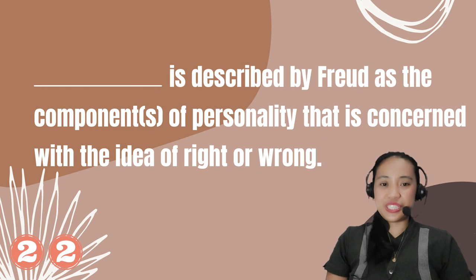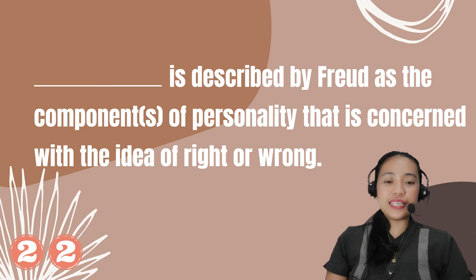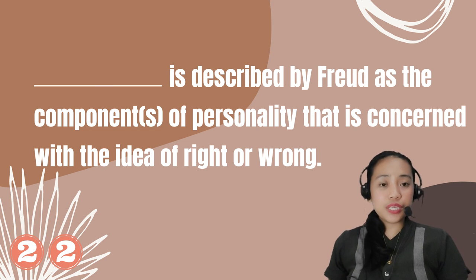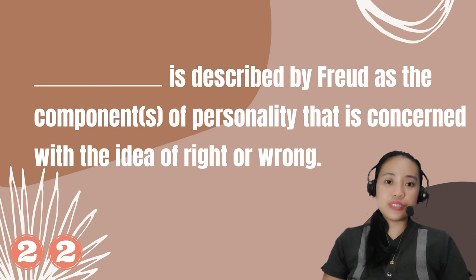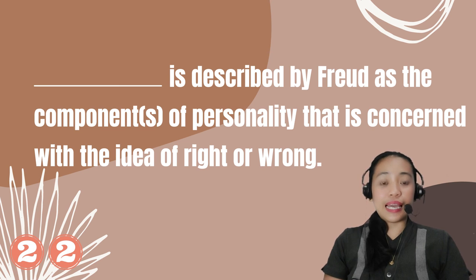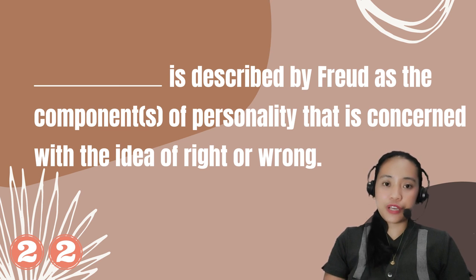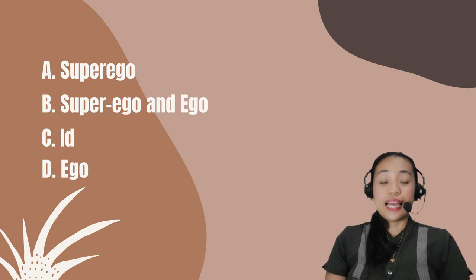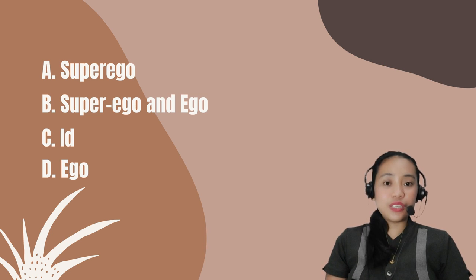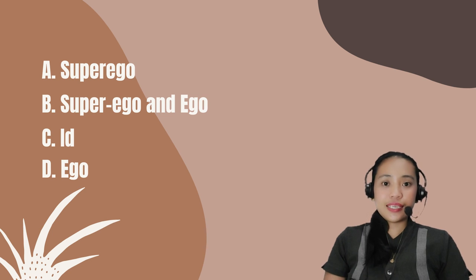Number 22. Blank is described by Freud as the component of personality that is concerned with the idea of right or wrong. A. Superego. B. Superego and ego. C. Id. D. Ego.